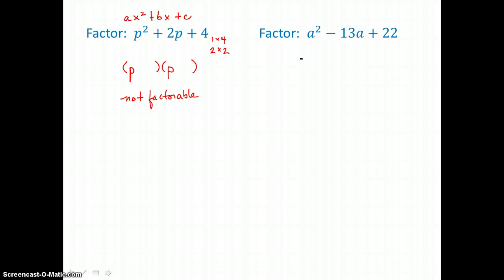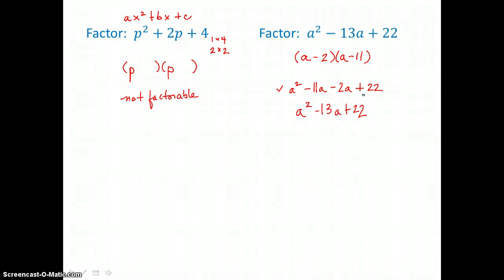Let's try this next one: a squared minus 13a plus 22. We'll try and factor this trinomial into a binomial times a binomial. Factoring a squared first: a times a is a squared. For the constant term, I'm looking for factors of 22 that add to give me 13, and those factors are 2 times 11. Because the middle term is negative, I want to make both factors negative. Checking by distributing: a times a is a squared, a times negative 11 is negative 11a, negative 2 times a is negative 2a, and negative 2 times negative 11 is positive 22. Adding like terms gives negative 13a plus 22, so I get my trinomial back and my factors check. a minus 2 times a minus 11 equals a squared minus 13a plus 22.